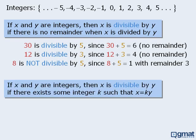Another way to define divisibility is to say that if x and y are integers, then x is divisible by y if there exists some integer k such that x equals k times y.